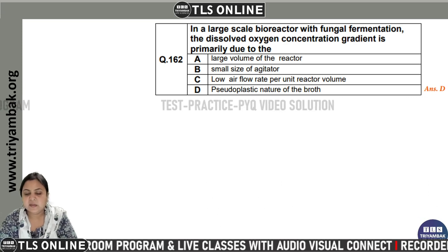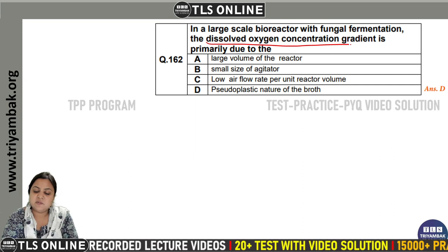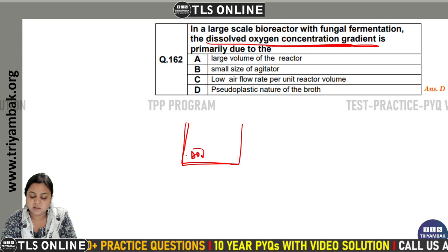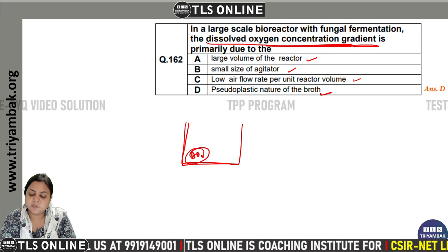In a large-scale bioreactor with fungal fermentation, the dissolved oxygen concentration gradient is primarily due to the large volume of the reactor, the small size of the agitator, the low air flow rate per unit volume, or the pseudo-plastic nature of the broth.